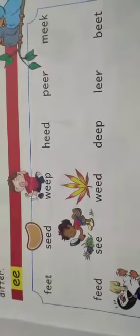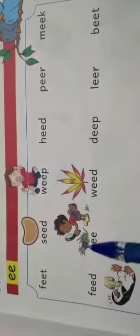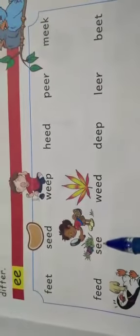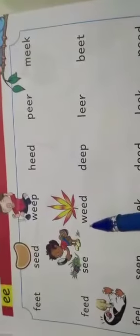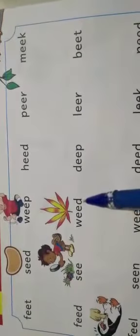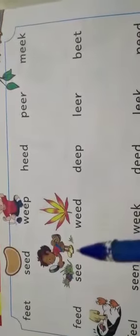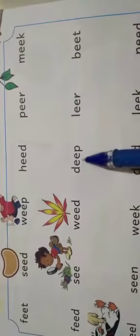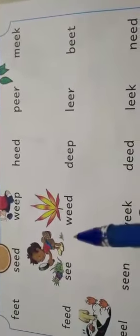Look at the next word. F-double-e-d: feed. S-double-e-k: seek. Next word — W-double-e-d: weed. D-double-e-p: deep.